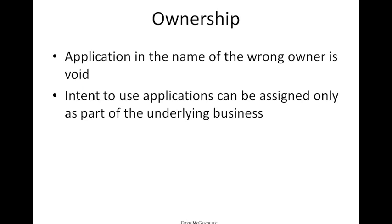The first big issue is ownership. An application filed in the name of the wrong individual — the wrong owner — is simply void. It's important to carefully look at who is the owner. This comes up during cancellation proceedings quite often, and people look at ownership as one way to knock an application out.